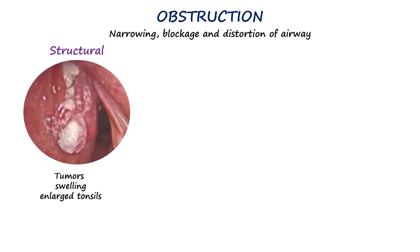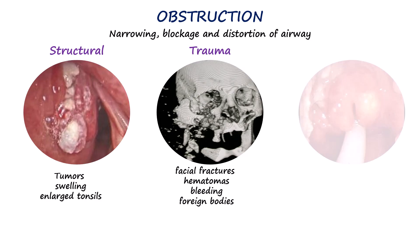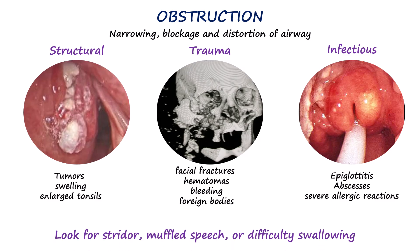The O in LEMON stands for obstruction, which refers to anything that narrows, blocks, or distorts the airway. This includes structural issues like tumors, swelling, enlarged tonsils, or congenital abnormalities. It also covers traumatic causes such as facial fractures, hematomas, bleeding, or foreign bodies in the airway. Inflammatory or infectious conditions like epiglottitis, abscesses, or severe allergic reactions can cause airway swelling. Warning signs like stridor, muffled speech, or difficulty swallowing should raise concern for obstruction.